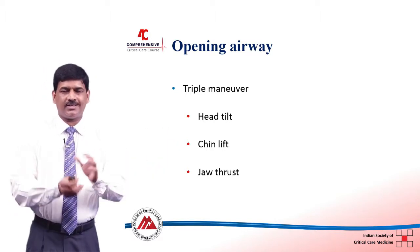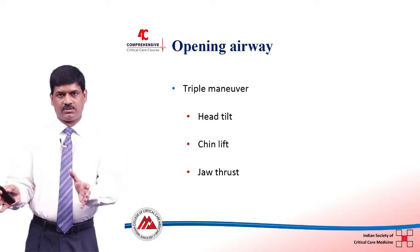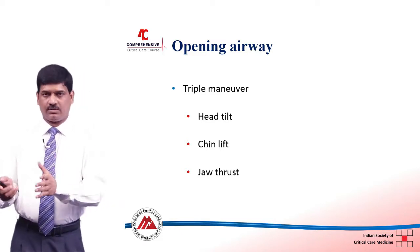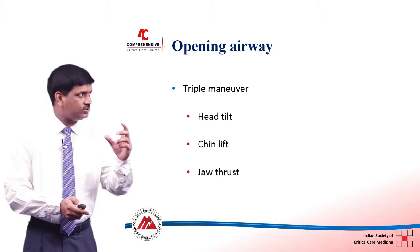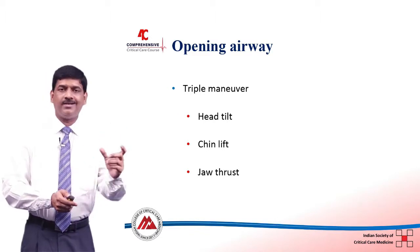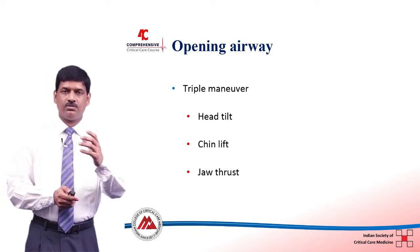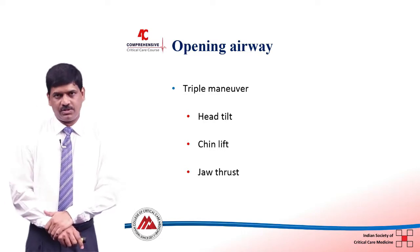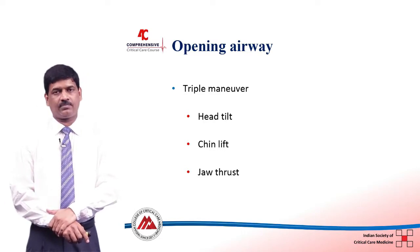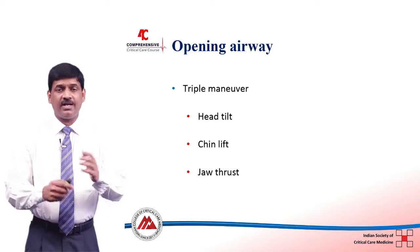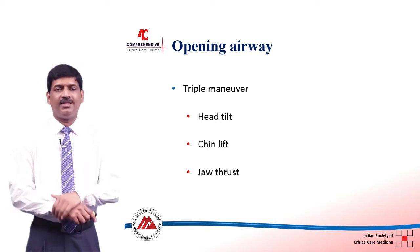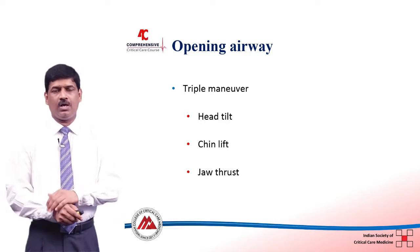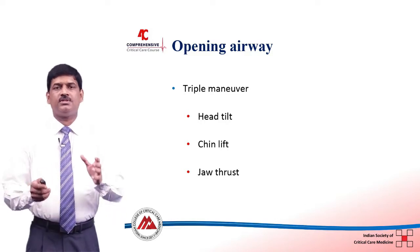What is a triple maneuver? It has three components: head tilt, chin lift, and jaw thrust. The first two — head tilt and chin lift alone — when you do that, opens the airway in 85 to 95 percent of patients. If that doesn't open up the airway, then we add the jaw thrust. I will now demonstrate to you how to do this triple maneuver.